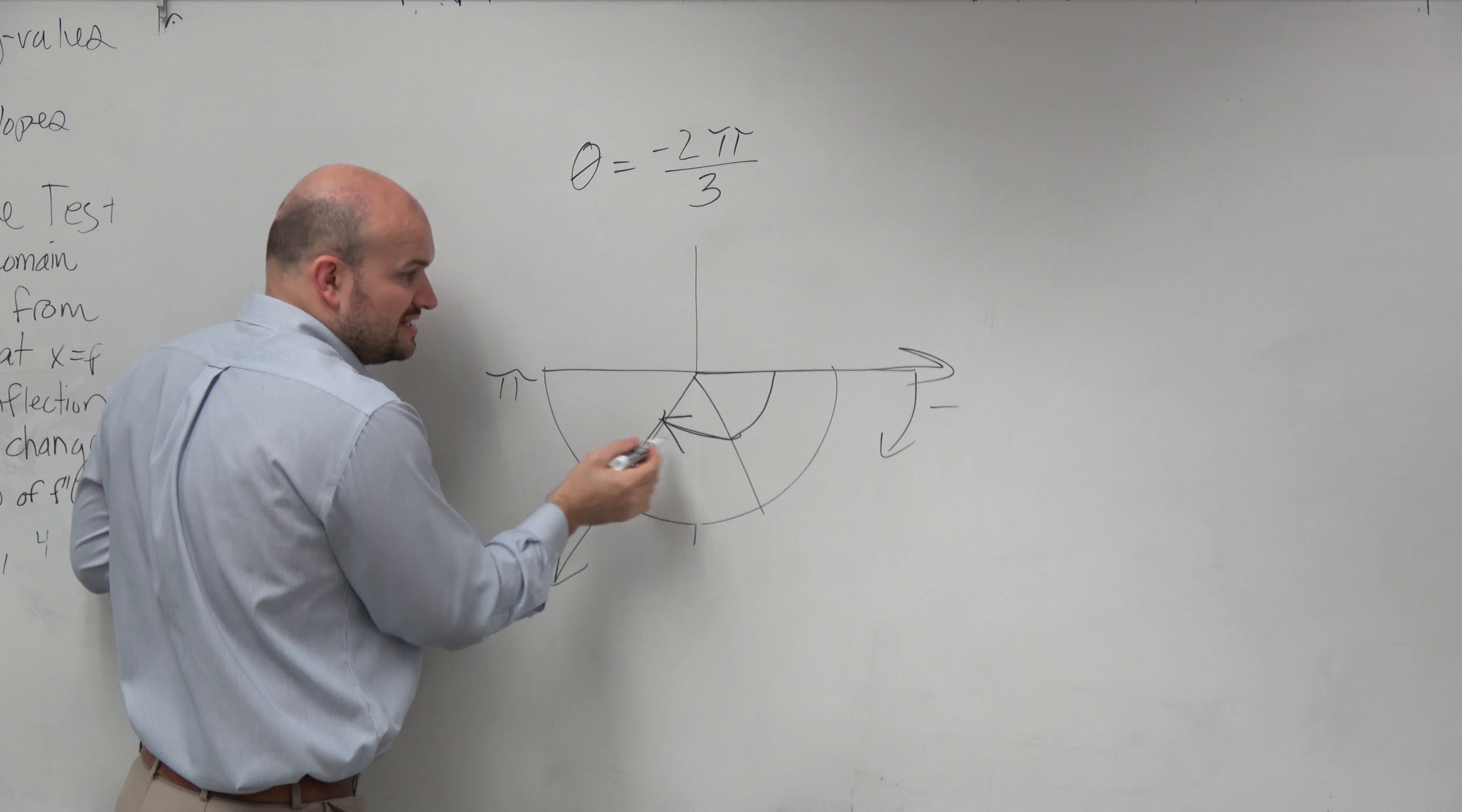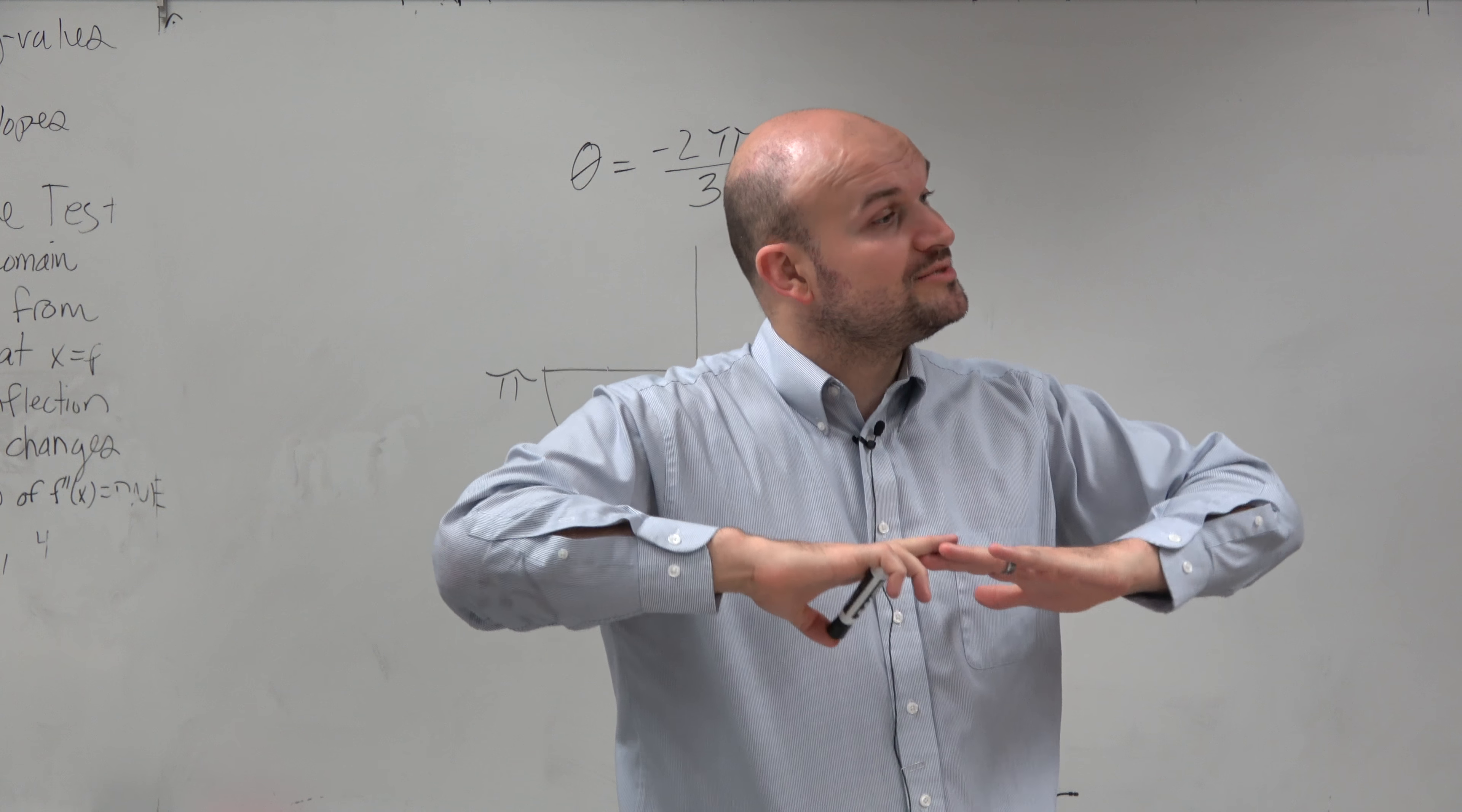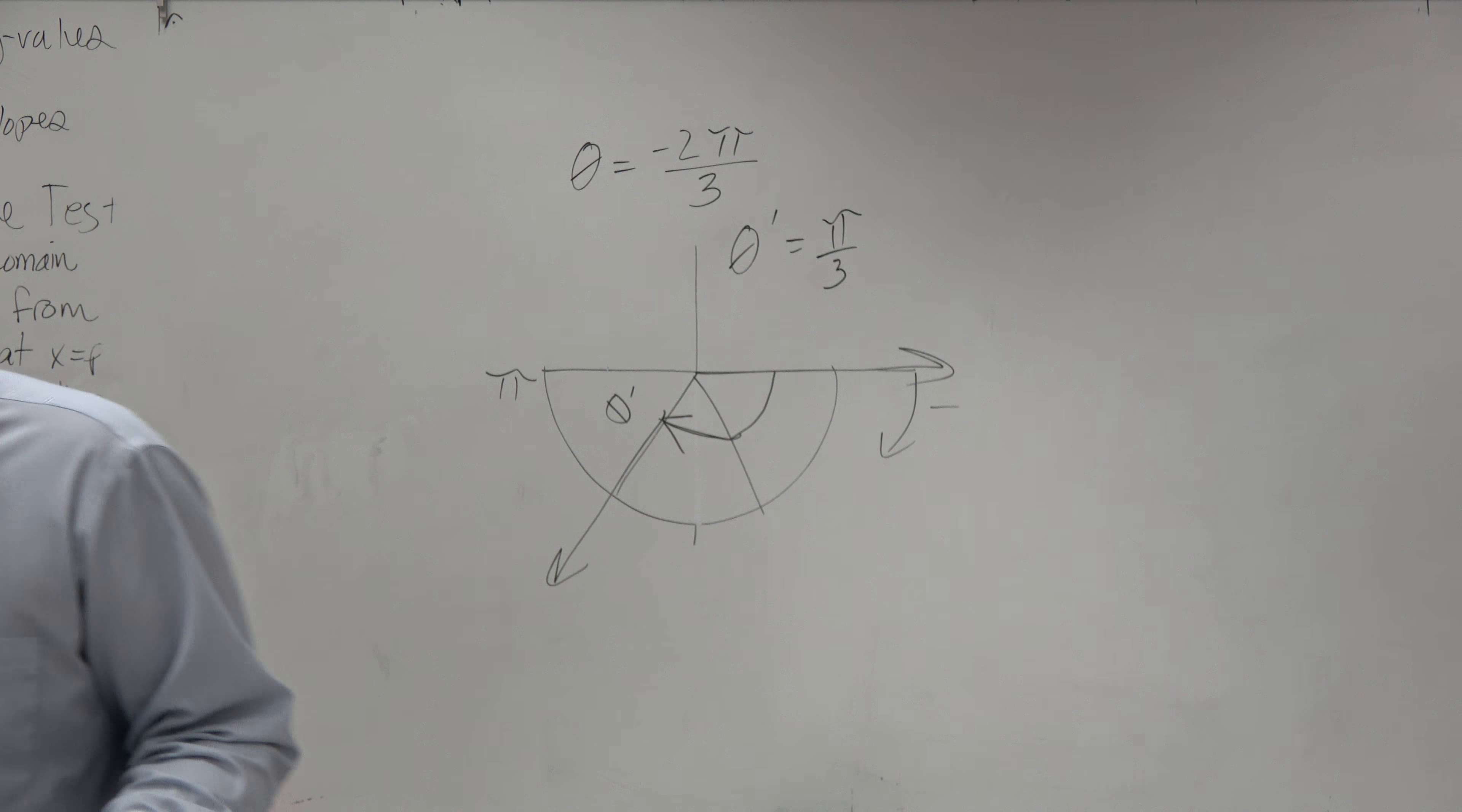The reference angle is the distance from the terminal side to the x-axis. How far is the terminal side to the x-axis? Pi over 3. Remember, it's always positive because it's measurement, not direction. So theta prime equals pi over 3. That's it, it's as simple as we need to get.